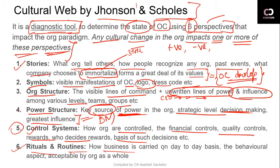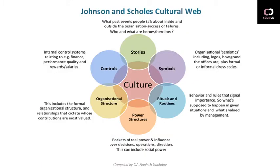Sixth is Rituals and Routines — these are the daily business habits, the behavioral patterns on which the organization is run, and these are acceptable by the organization as a whole. So these are the six perspectives — six points that impact the organization's environment and help us understand the state of organizational culture. The Cultural Web is a diagnostic tool given to us by Johnson and Scholes.